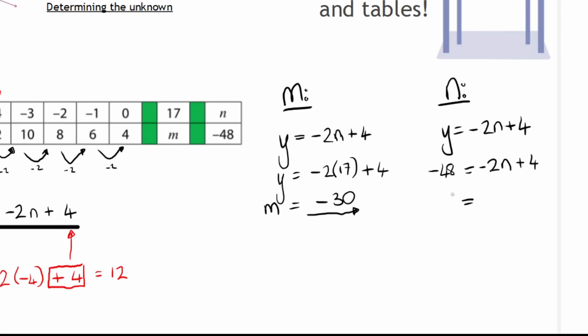So first I take this negative 2n term across the equation and it becomes positive 2n, and this negative 48 goes across and it becomes positive 48 plus 4. So some simplification is going to tell me that this is 52, and finally solving for n by dividing both sides with 2 gives me that n is 26.